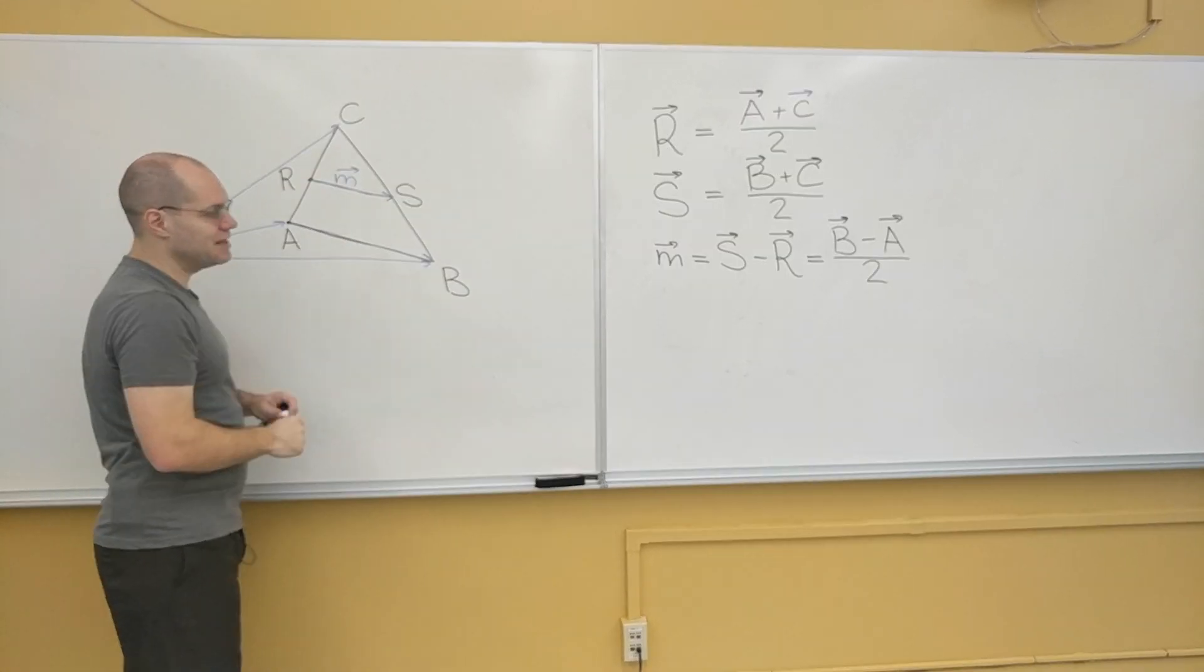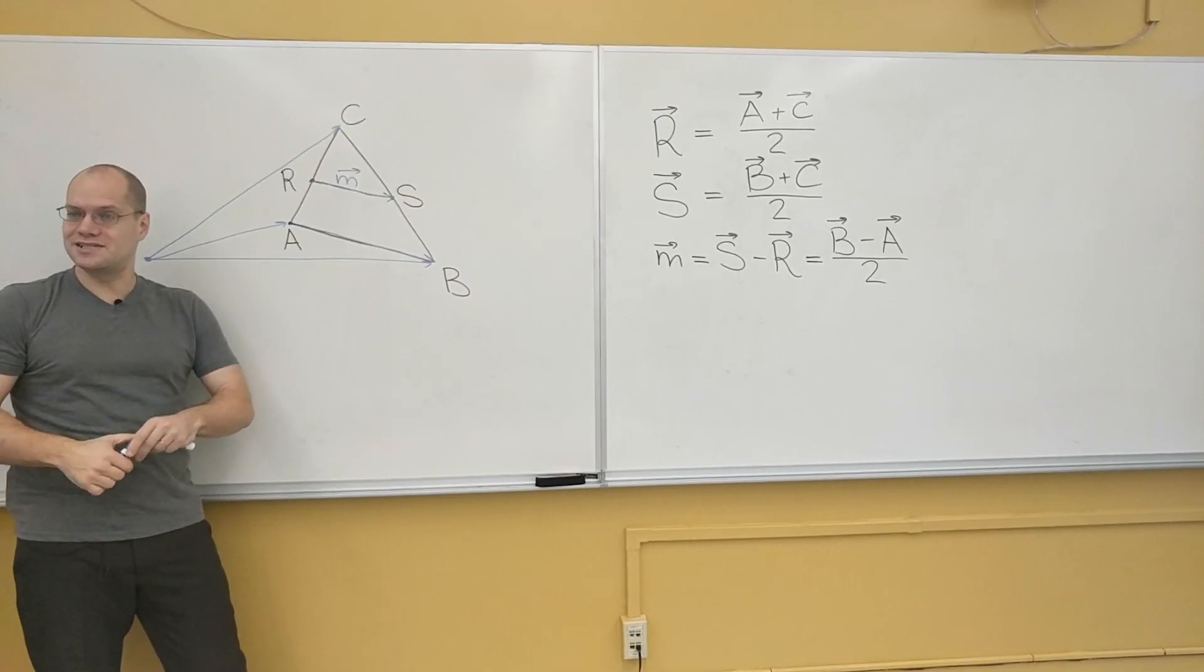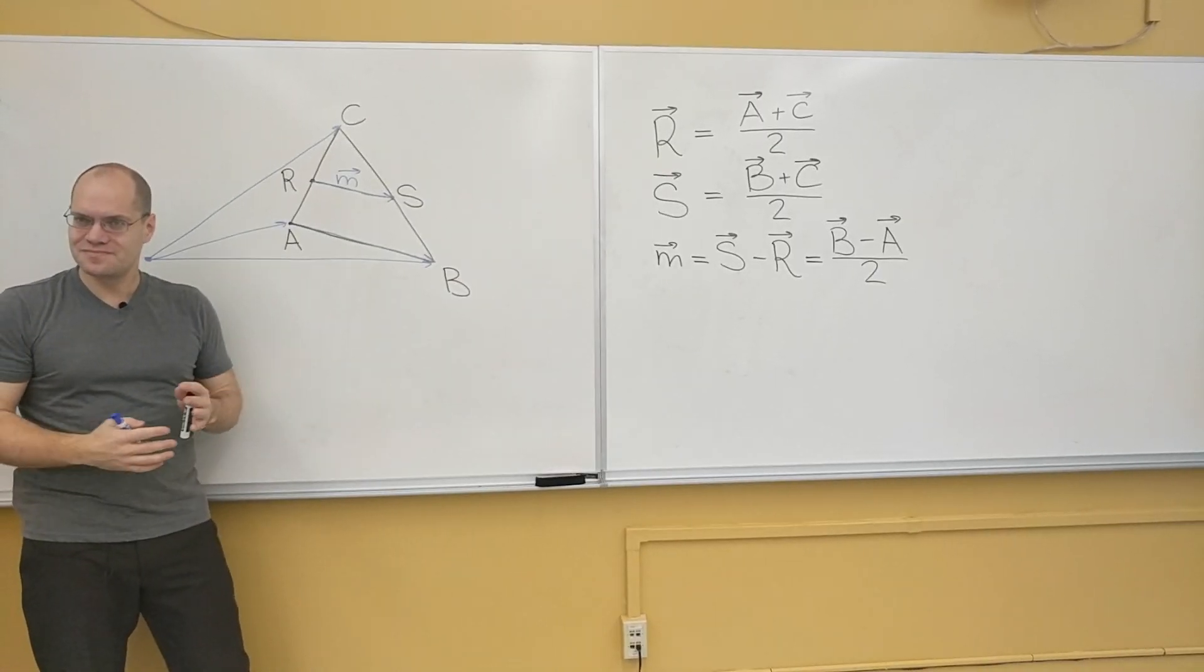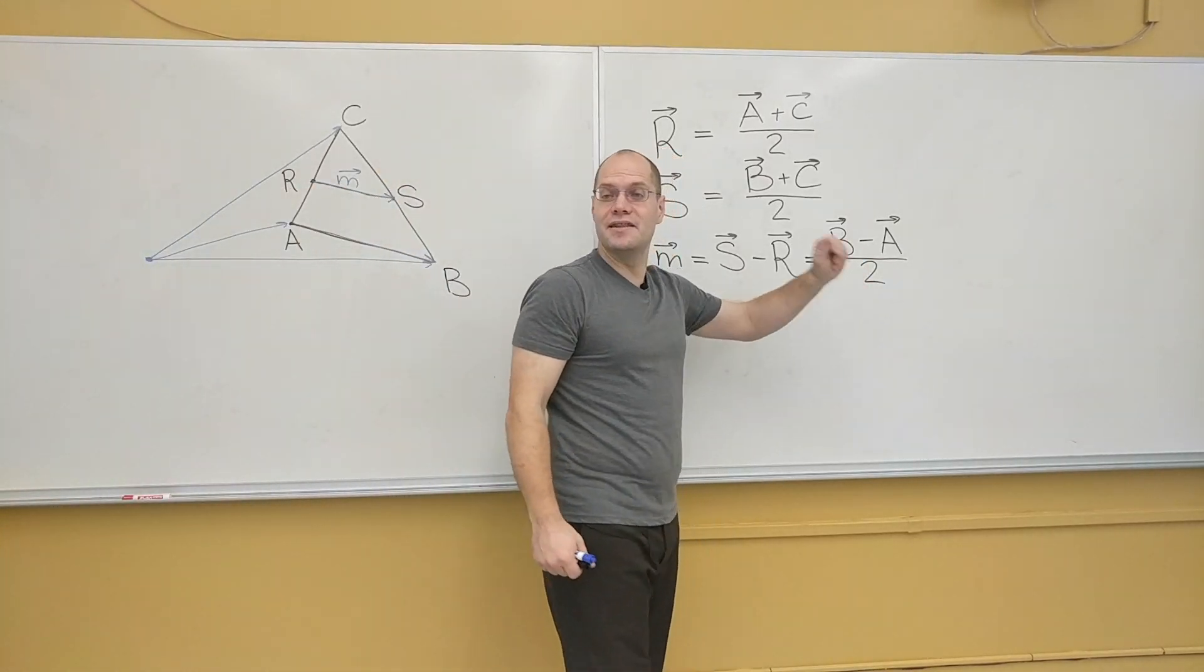And this mid-segment right here is B minus A over 2. Therefore, it points in the same direction and has half the length. And the proof is complete.